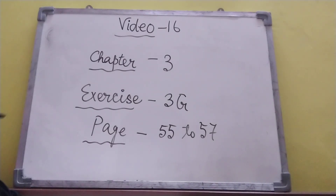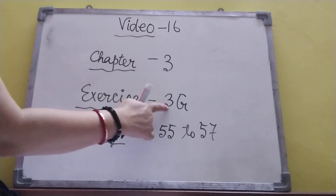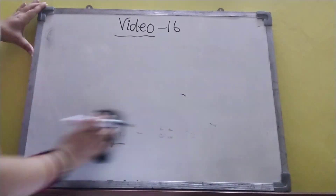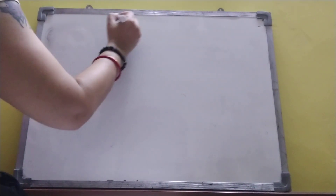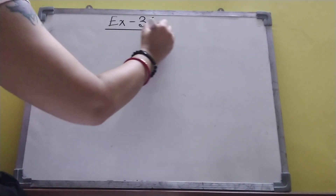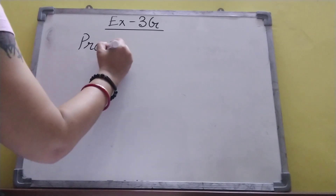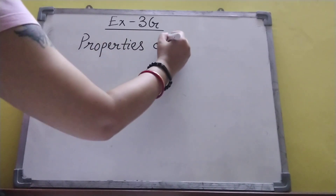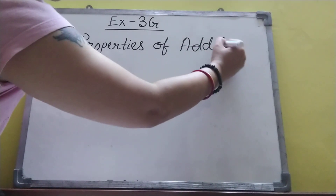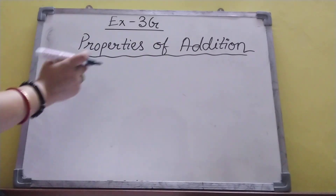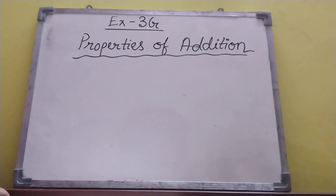Good morning, my dear students. Today I am going to teach you Exercise 3G, page number 55 to 57. So take out page number 55 from your textbook. Properties of Addition means when we add, which all properties we are using, that I will be discussing now in this video.